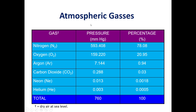This is an example of molecules available in atmospheric gases. Nitrogen is the major molecule, at around 78%. Then comes oxygen at around 21%, and the rest of the gases make up around 1%.